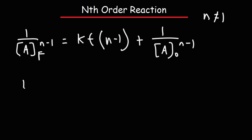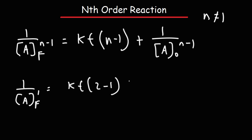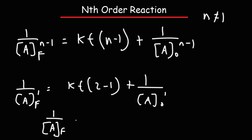For a second-order reaction, n is 2. So 2 minus 1 is just 1. This gives kt times (2 minus 1), which is kt, plus 1 over a_initial raised to 1. So we get the second-order integrated rate law: 1 over a_final equals kt plus 1 over a_initial.